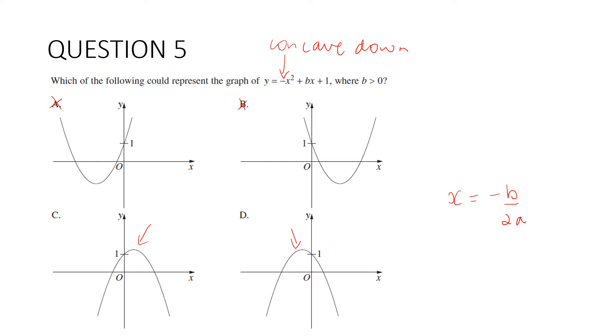If we substitute in what we know, it's going to be negative b on two lots of negative 1. We're going to end up with b over 2. And it tells us here that b is a positive number. So our axis of symmetry x equals a positive number like here. So the answer is c.